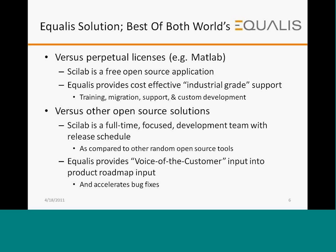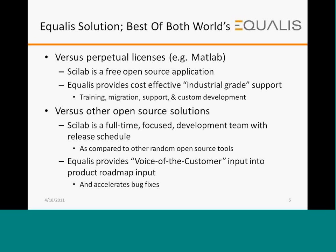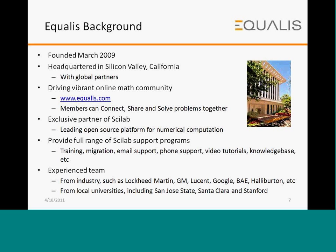Equalus was founded two years ago and is headquartered in Silicon Valley, California, with global partners. I am from TechPassion, the Indian partner of Equalus. Equalus is a partner of Scilab — a leading open source platform for numerical computation — and we offer a full range of Scilab support programs from training, migration, email support, phone support, video tutorials, and other support materials. We are an experienced team with backgrounds from companies such as Lockheed, GM, Google, and Halliburton, and educational backgrounds from Stanford, Santa Clara, and San Jose State University.